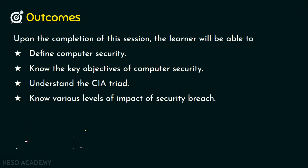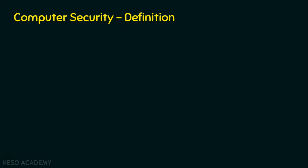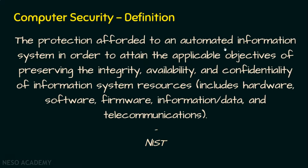Before we step into the CIA Triad, let's see the definition of computer security. The definition is: the protection afforded to an automated information system in order to attain the applicable objectives of preserving the integrity, availability, and confidentiality of information system resources — which includes hardware, software, firmware, information or data, and telecommunications. This definition is from NIST, a government organization of the United States. There are many key terms in the definition, so let's figure out the three important ones.